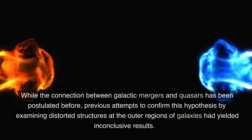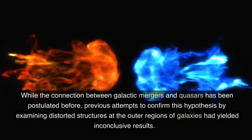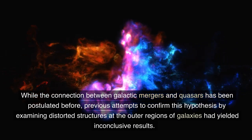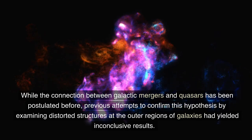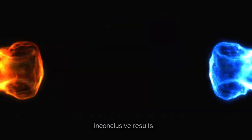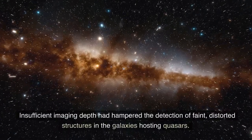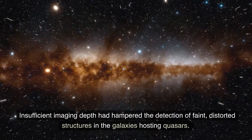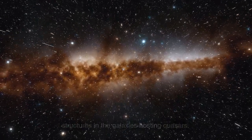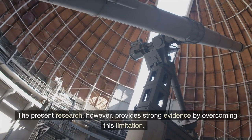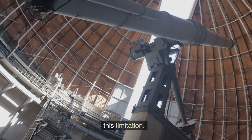While the connection between galactic mergers and quasars has been postulated before, previous attempts to confirm this hypothesis by examining distorted structures at the outer regions of galaxies had yielded inconclusive results. Insufficient imaging depth had hampered the detection of faint, distorted structures in the galaxies hosting quasars. The present research, however, provides strong evidence by overcoming this limitation.